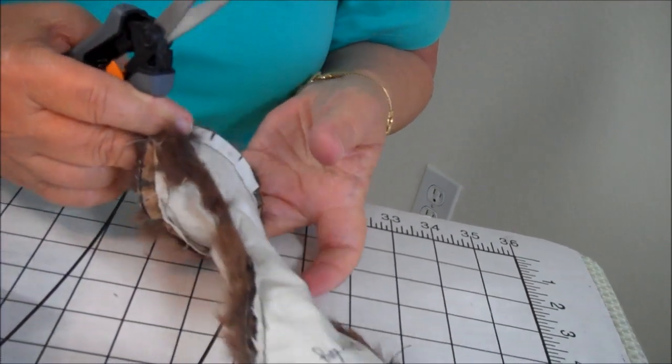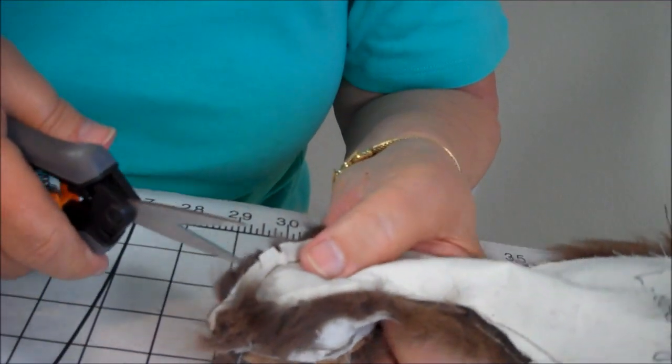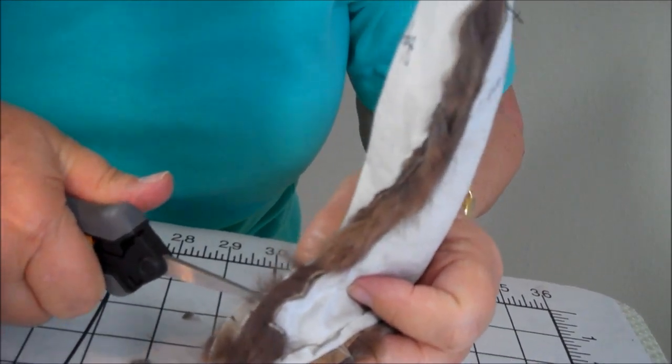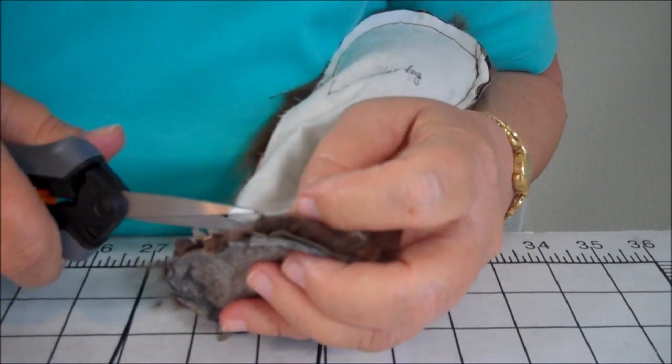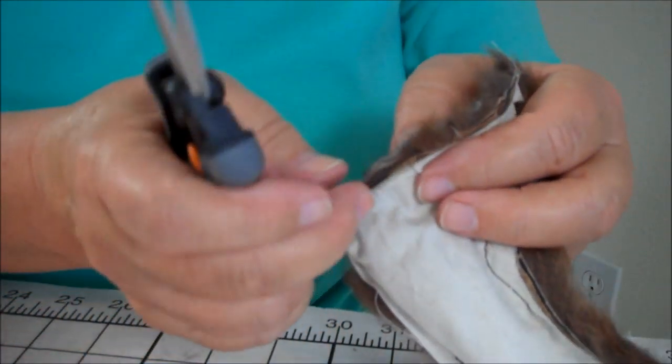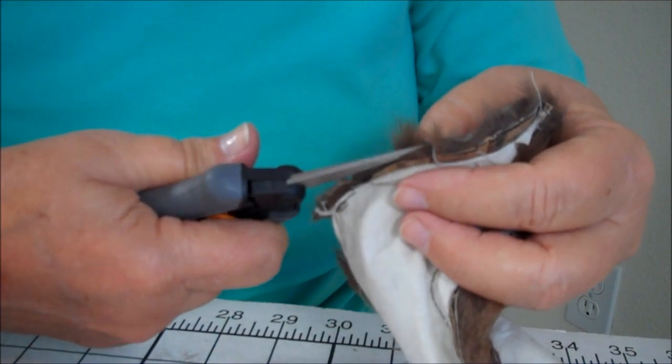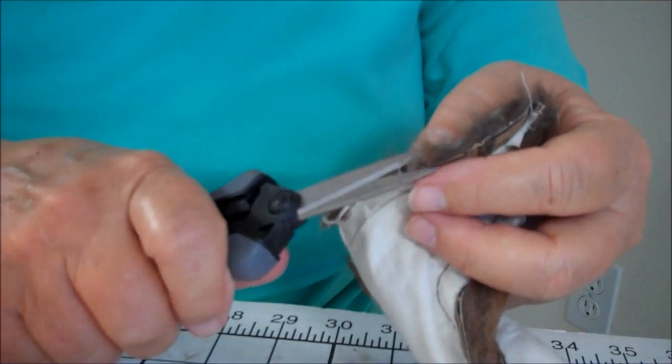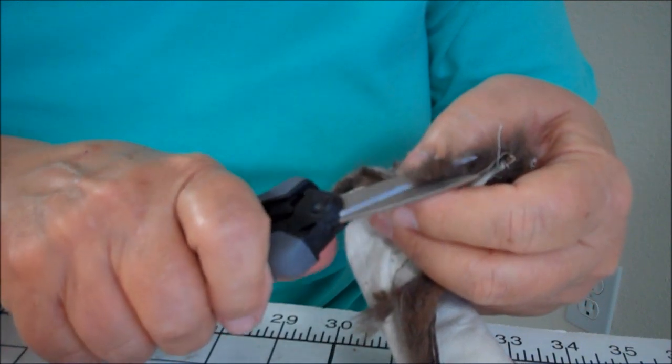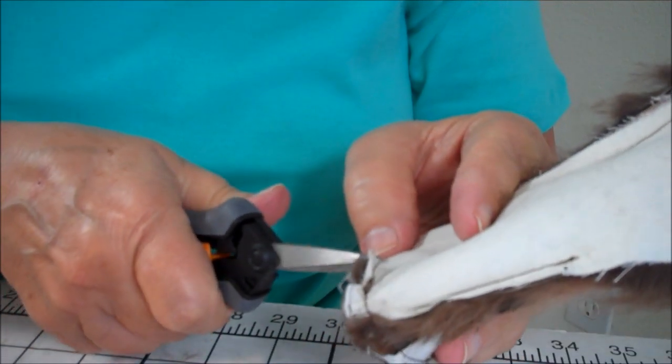Now what I do is I make more clips along here, and I cut little Vs out because this gets rid of the bulk, and it looks more finished once you turn it right side out. Another good thing is to clip away all of this excess fur in that seam allowance. I'm cutting some of this fur that's hanging out, which is in the seam allowance. Now I'm going to do little V notches all the way around.